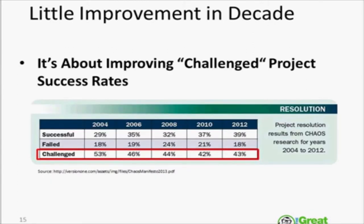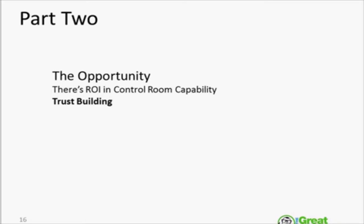Unfortunately, as an industry — IT in particular — we have not really developed a very good track record of success. Failed projects are still almost 20 percent, and challenged projects are still almost half. So year after year, our customers have reinforced in their minds the fact that we are not necessarily going to deliver, and they don't like finding out at the last minute. This webinar is really about how we deal with early warning signs so that our customers can feel confident that either they're going to get what they expect, or if they're not, they know early enough to reset expectations.